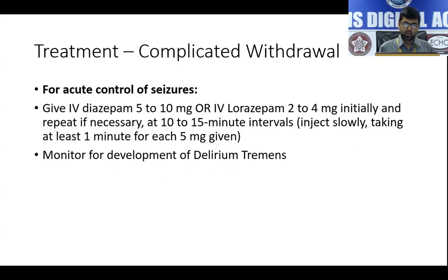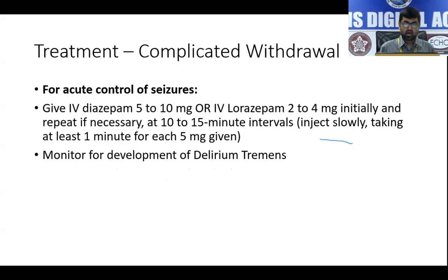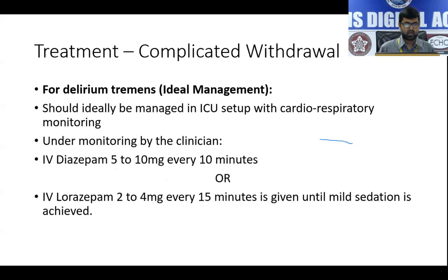For acute control of seizures in alcohol withdrawal, the treatment of choice is again benzodiazepines. Give IV diazepam 5 to 10 mg or IV lorazepam 2 to 4 mg slow IV, and repeat if necessary at 10 to 15 minute intervals. Be very cautious about monitoring for the development of delirium tremens in individuals who have seizures, as they are at greater risk for developing it.